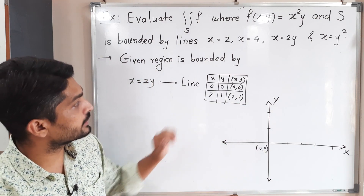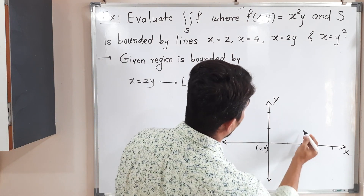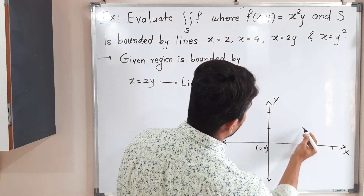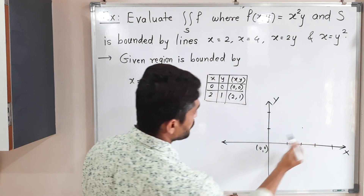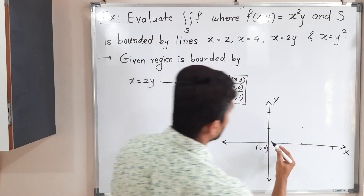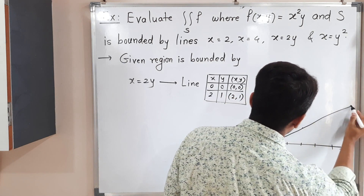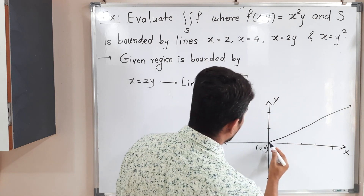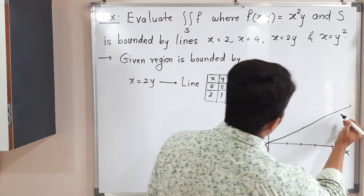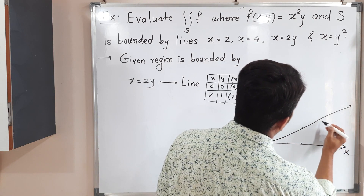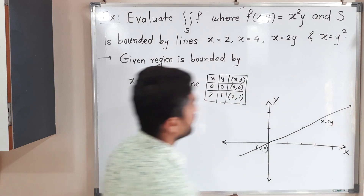So the line passes through these two points: (0, 0) and (2, 1). Let me draw the line passing through these two points. So the line will be like this — and I should mention here: x is equal to 2y.